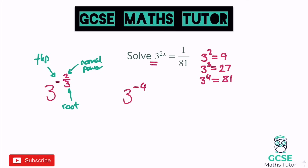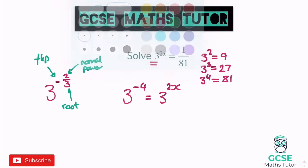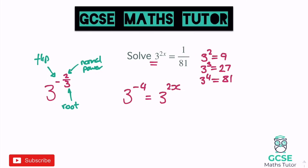We know that 3 to the power of minus 4 equals 3 to the power of 2x. Since the base numbers are the same, we can equate the powers: 2x equals negative 4. Dividing both sides by 2 gives x equals negative 2, and that's our answer.